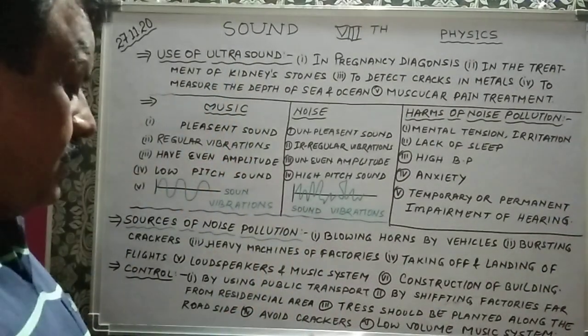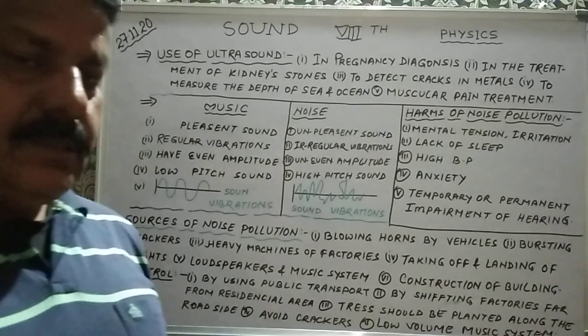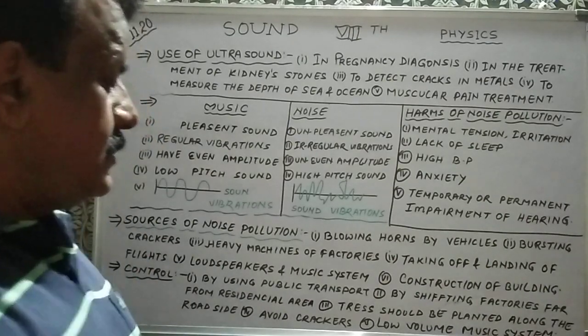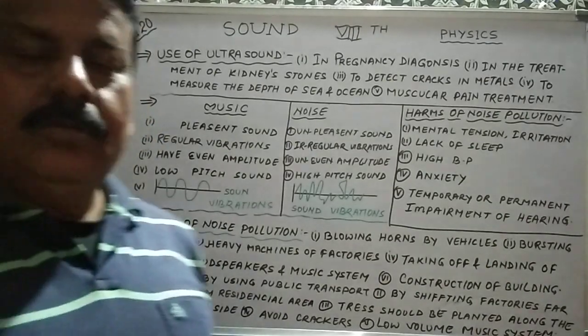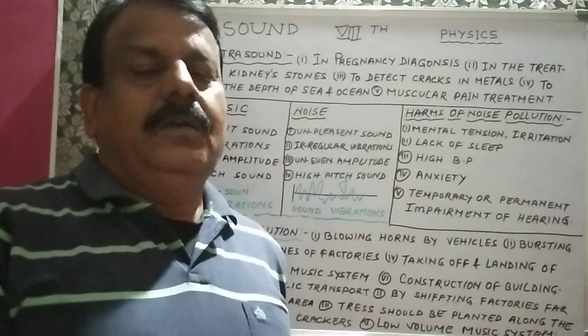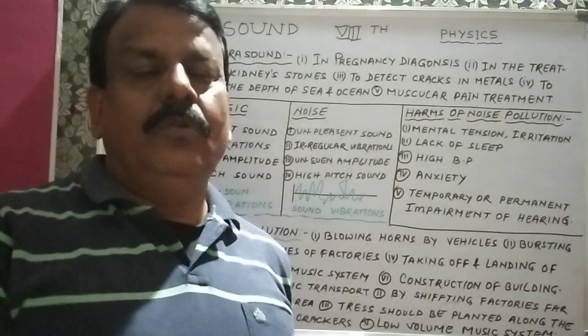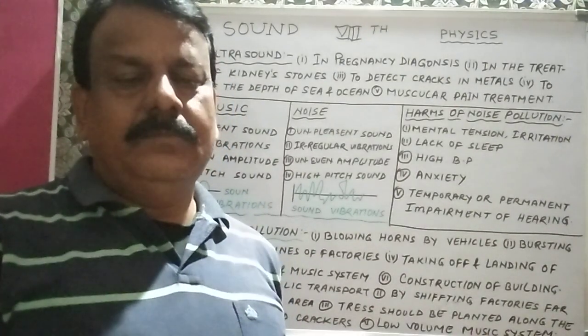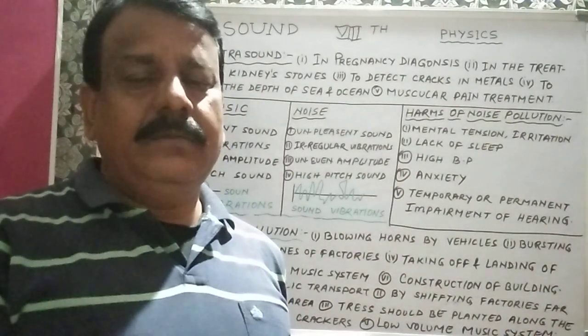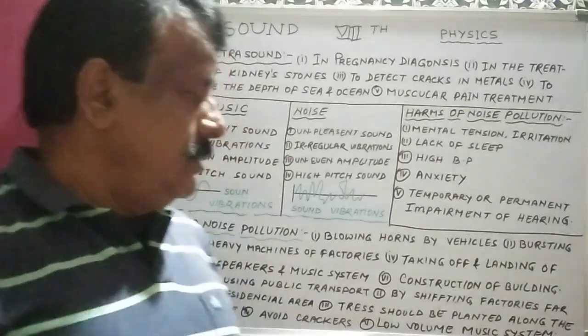We should avoid bursting crackers. And lastly, we should use a low volume music system. By applying these measures — public transport, relocating factories, planting trees, avoiding crackers, and keeping music at low volume — we can control noise pollution.